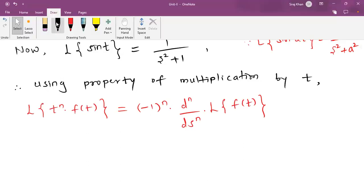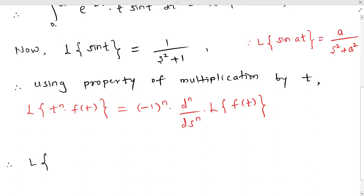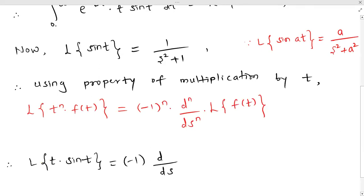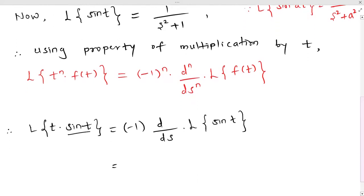We apply this formula to find L{t·sin(t)}. Since we are multiplying by t (i.e., t^1), n=1, so: L{t·sin(t)} = (-1)^1 · d/ds [L{sin(t)}] = -1 · d/ds [1/(s²+1)]. We substitute L{sin(t)} = 1/(s²+1), giving us -d/ds[1/(s²+1)].